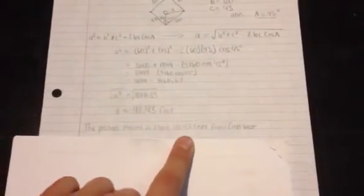So in summary, the pitcher's mound is about 42.43 feet from first base, and we got there by using this formula.